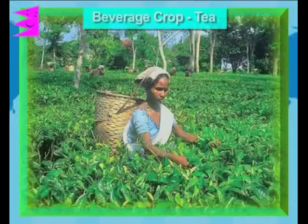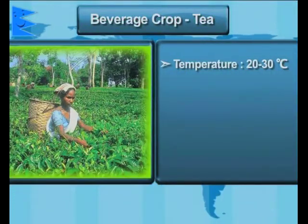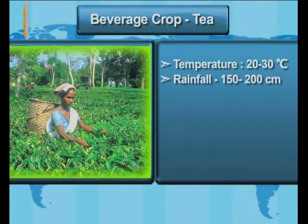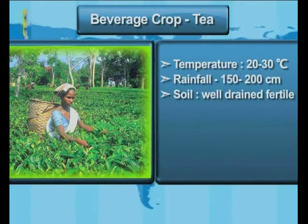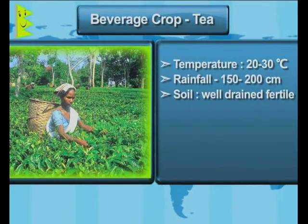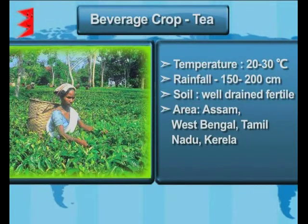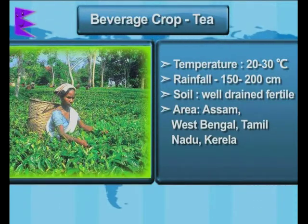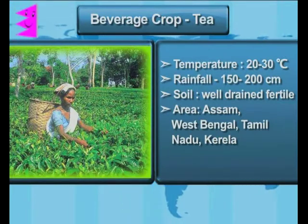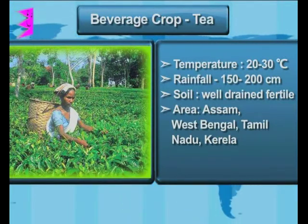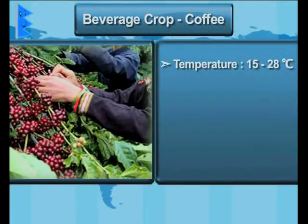Let's make their tables. Tea: the temperature required is 20 to 30 degrees centigrade, the rainfall is 150 to 200 centimeters, the soil has to be well-drained fertile soil. The areas where tea is grown are Assam, West Bengal, Tamil Nadu, and Kerala. Have you drawn your table for tea? Then let's move to coffee.